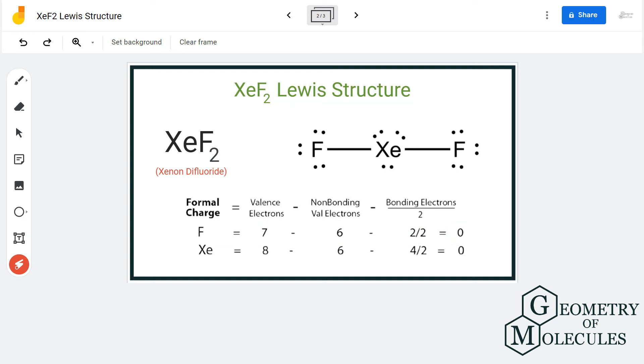Similarly, we will calculate the charges for xenon. Xenon has 8 valence electrons, there are 6 non-bonding valence electrons, and there are 4 bonding pairs of electrons. So here also we are getting a formal charge of zero. So this is the most stable structure for XeF2, and hence this is the most accepted Lewis structure for XeF2.